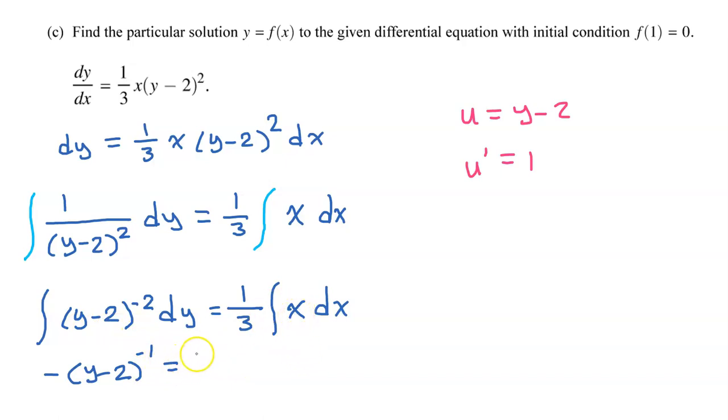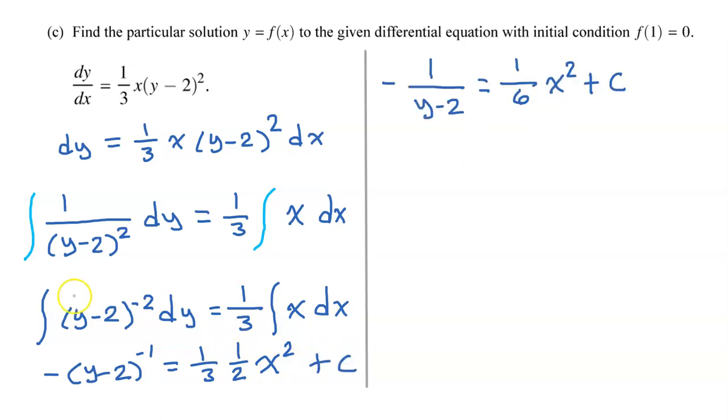Over here, I bring down the 1/3. And then I will have x squared as I add 1 to the exponent. And I divide by the new exponent. So I divide by 2 plus c. Rewriting the negative exponent as a fraction and multiplying 1/3 times 1/2, we have this.